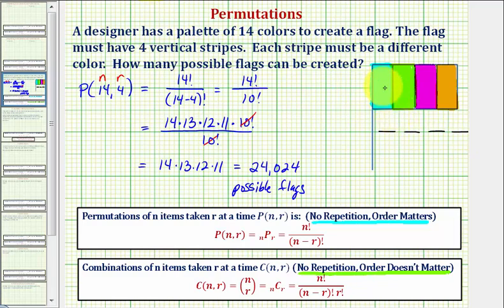Let's call this first event C sub one for selecting the first color, followed by C sub two, C sub three, and C sub four.